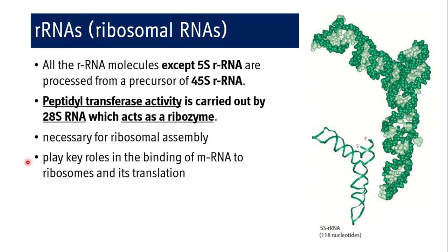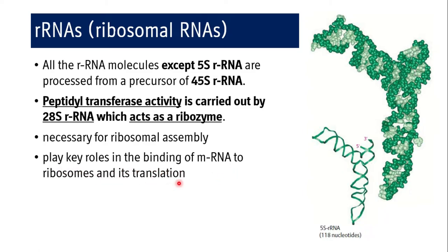All ribosomal RNA molecules except 5S rRNA are processed from a precursor, 45S rRNA. What is this 'S'? S is the sedimentation coefficient, or Svedberg unit, which defines the speed or movement of any particle during centrifugation. Among the various rRNAs, 28S rRNA has peptidyl transferase activity and acts as a ribozyme. It is necessary for ribosomal assembly and plays a key role in the binding of mRNA to ribosomes and its translation.